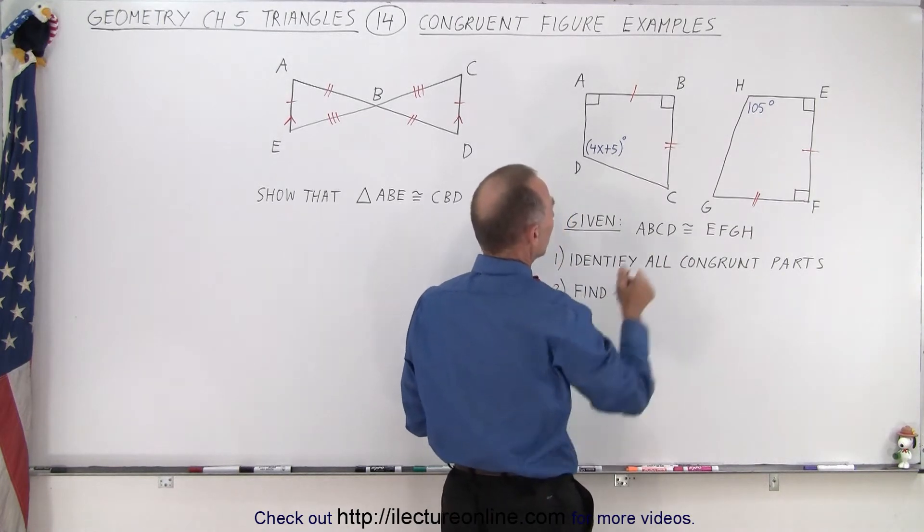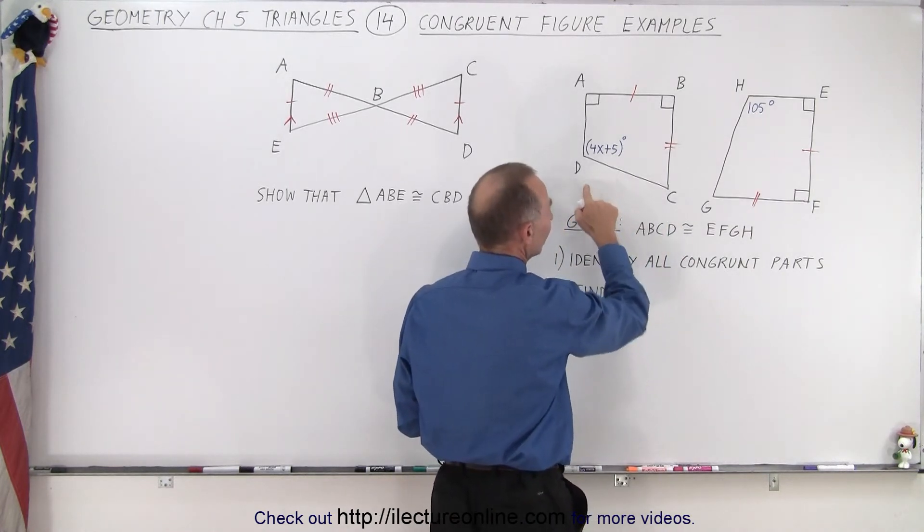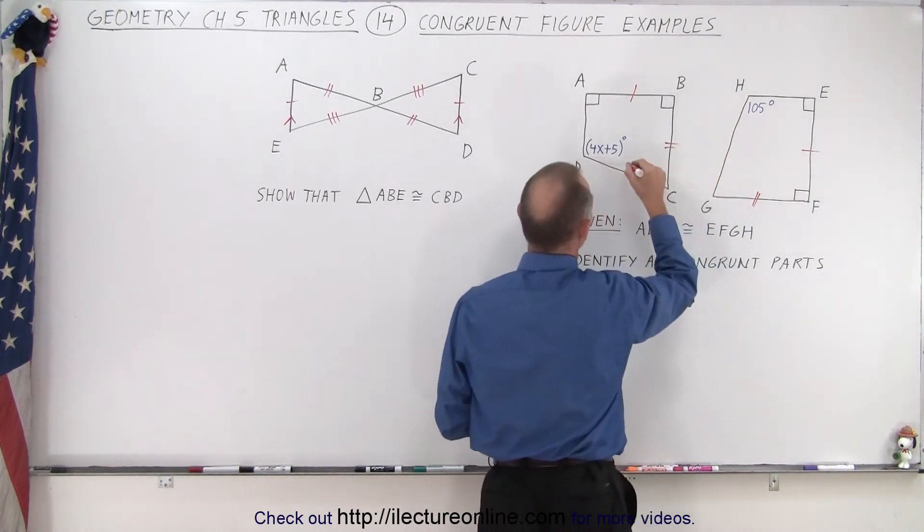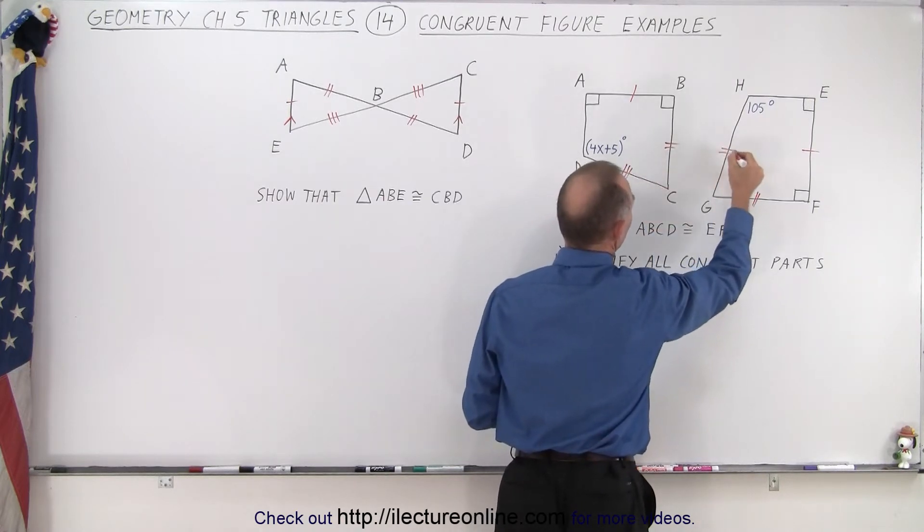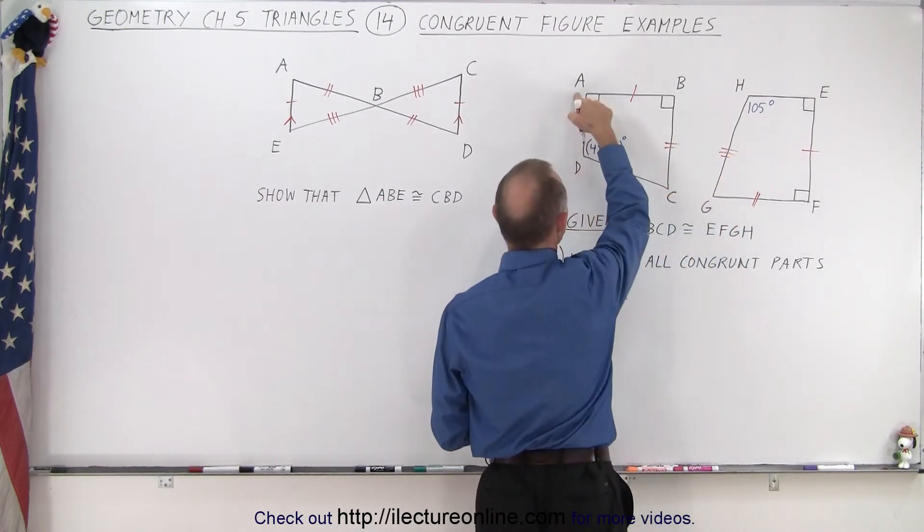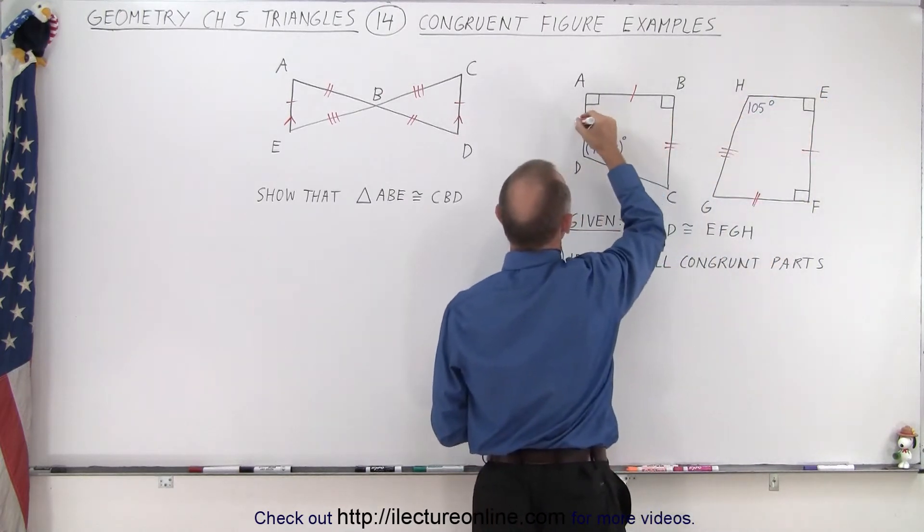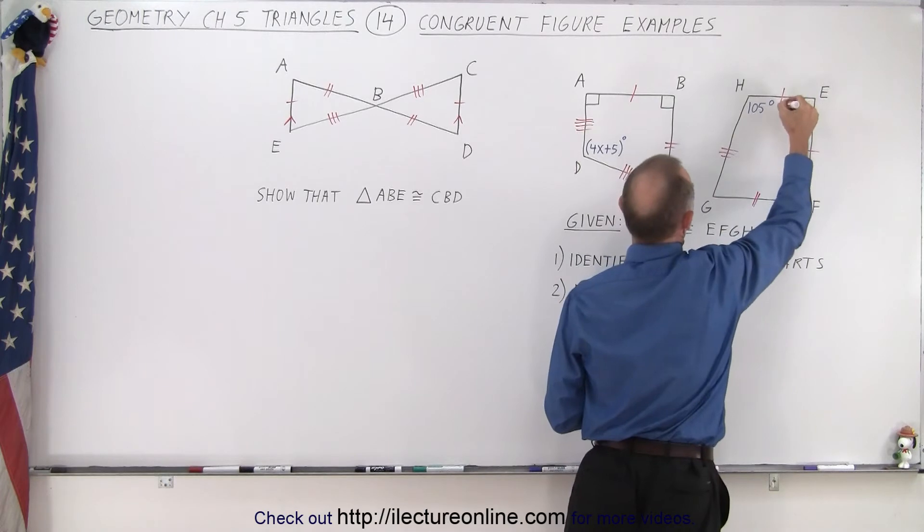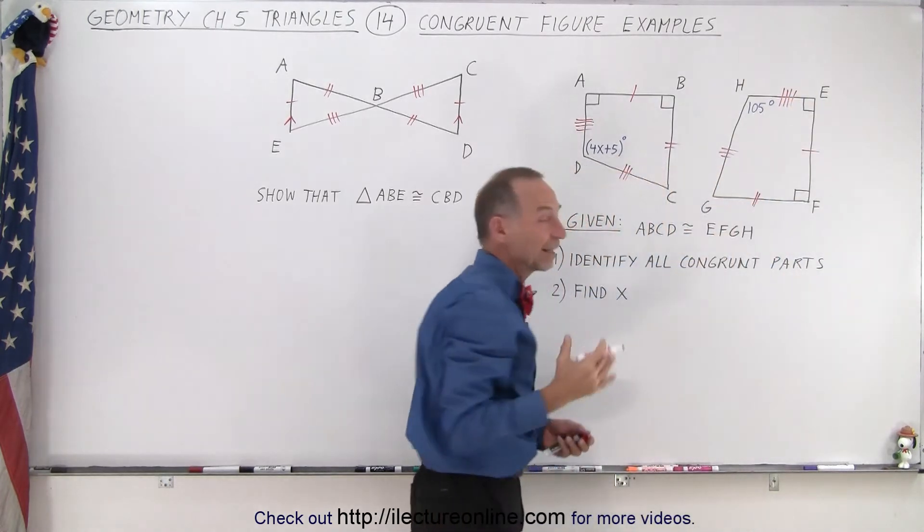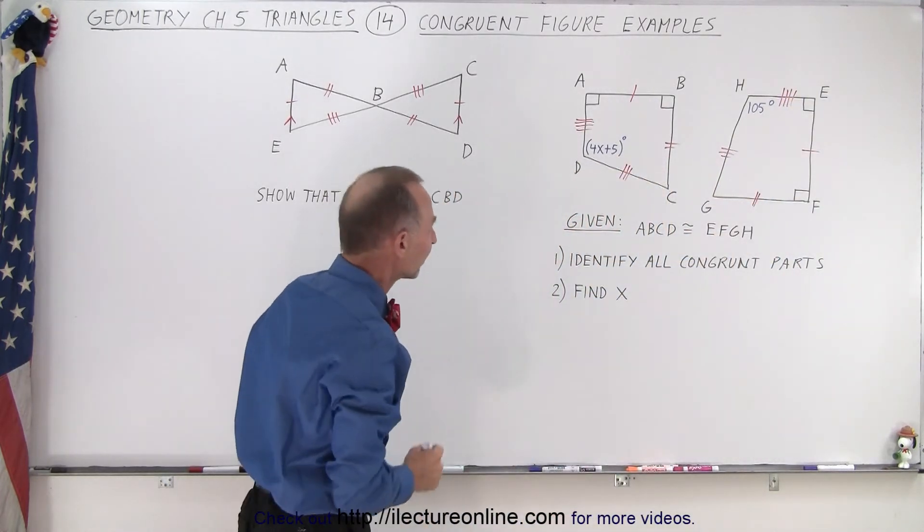In other words, have the same length. Going from C to D must be the same length as going from G to H. And then going from D back to A, that has to be the same length as going from H back to E. So here we have identified all the corresponding sides.